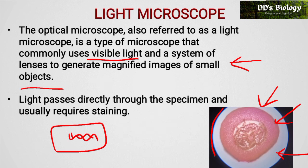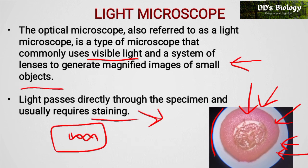In a bright field microscope, the background is brighter and the specimen appears darker. To create contrast we use staining. Common stains used are methylene blue, saffranin, and crystal violet. Because of these stains, we can identify the contrast in the bright field microscope.